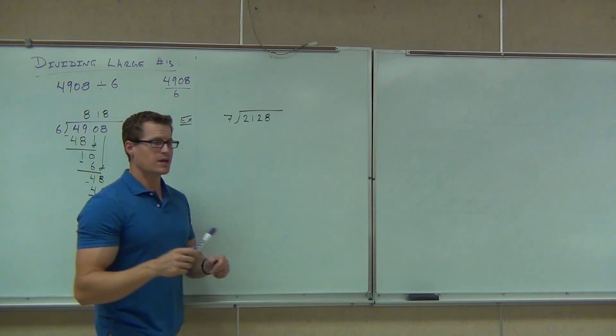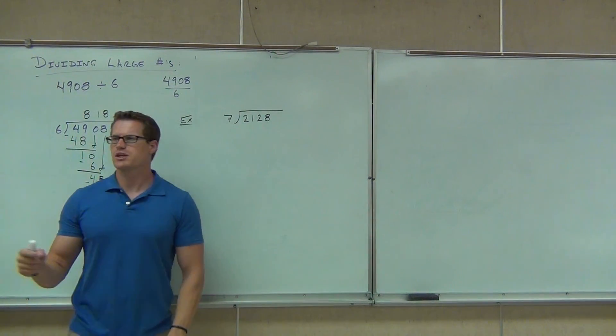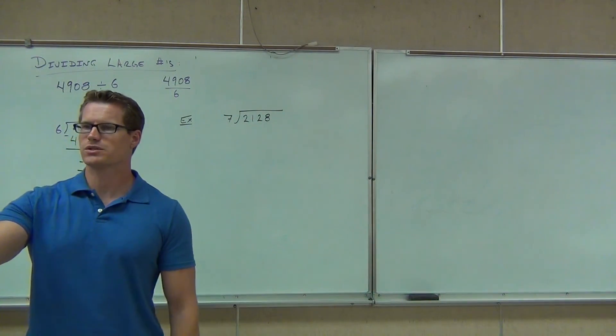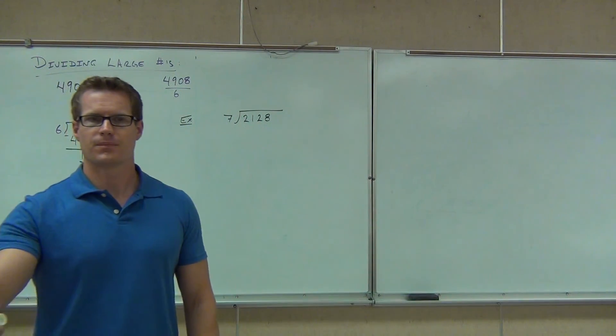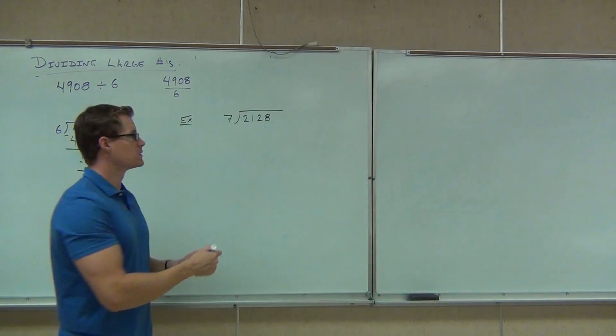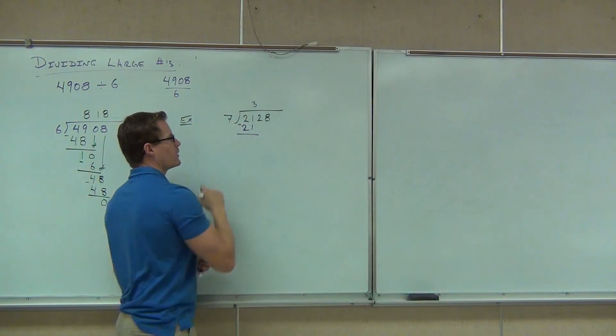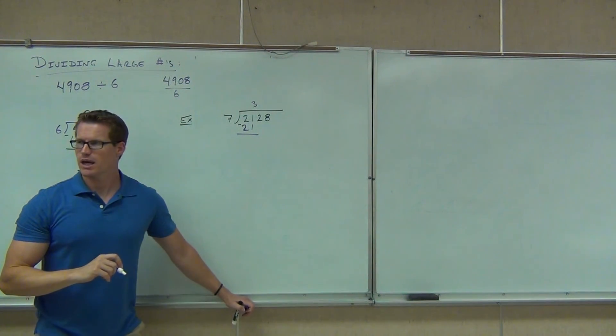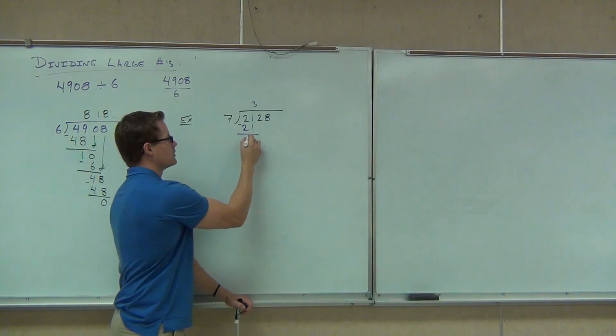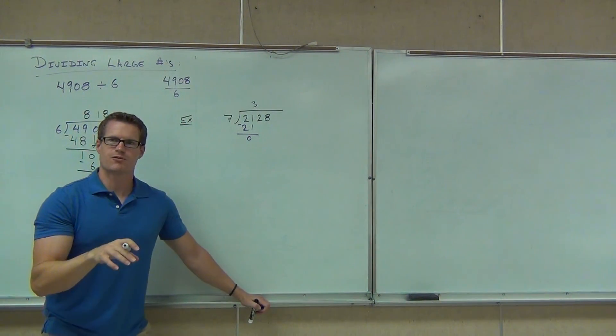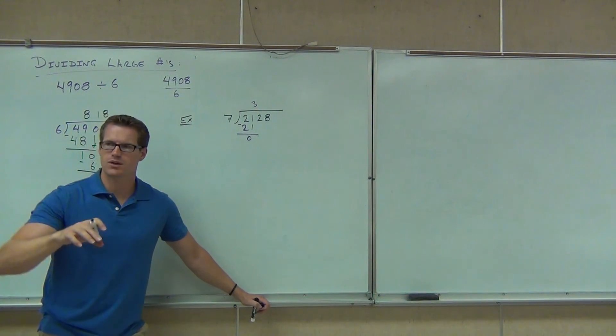Okay, let's try this. Seven into 2,128. The first thing we check is seven into which number, folks? 21. And how many times? Three. We multiply. We get 21. We subtract. Wait a second. We get zero. Is that okay? Yeah. Okay. This is actually a really important example for you to see. Pay attention right now. Even if you think, man, I got division down.